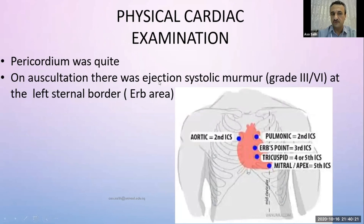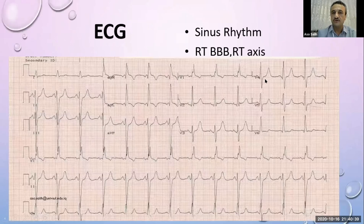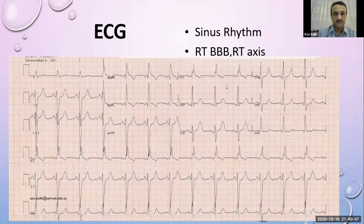On examination of the precordium, it was very quiet. On auscultation, there was an ejection systolic murmur grade three over six at the sternal border area, between the pulmonary and tricuspid areas. ECG shows sinus rhythm with right bundle branch block and right axis deviation.